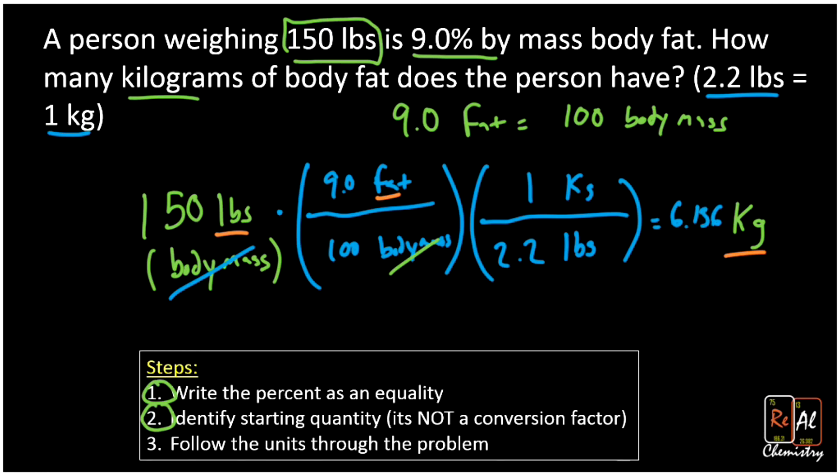Now how many sig figs should I round to? This 150 has just two sig figs—the 1 and the 5—and that means I should round this to two sig figs, which would be 6.1 kilograms of fat. Notice we started with total body mass of 150 pounds and ended up with just fat.